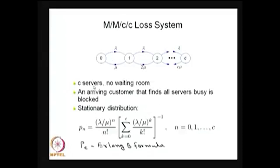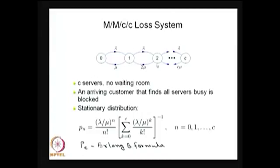Here we have C identical servers and no waiting room. Since capacity equals C, it can also be visualized as a self-service system with capacity C. Inter-arrival times are exponentially distributed and each server's service time is exponential with parameter mu. The death rates are 1·mu, 2·mu, up to C·mu. It is an irreducible, positive recurrent model, so steady-state and limiting probabilities exist and equal the equilibrium probabilities.